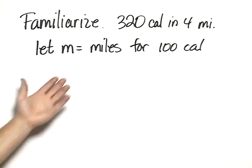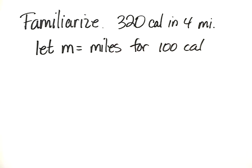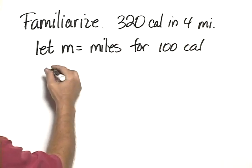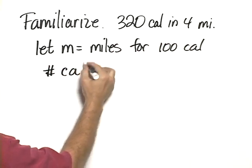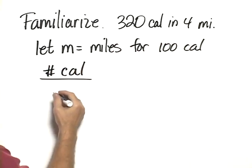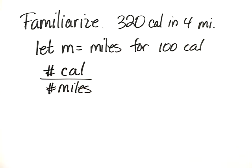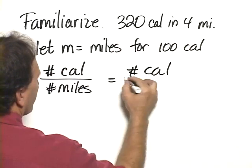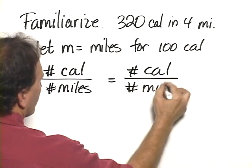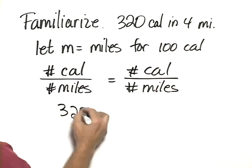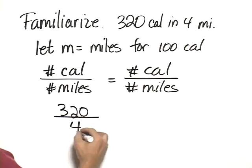This is a classic situation in which we can use a proportion to solve this. So we want to translate, which is the second step of the process, that the number of calories divided by the number of miles must be the same for each situation. So what we know is that we burn 320 calories walking 4 miles,